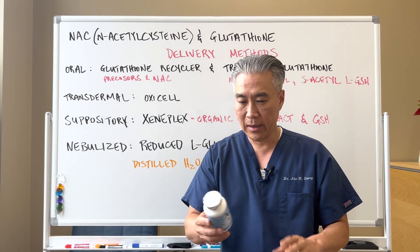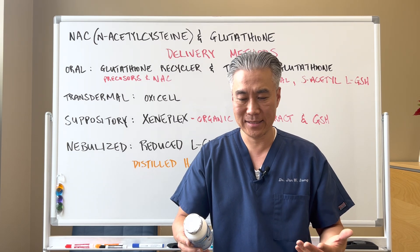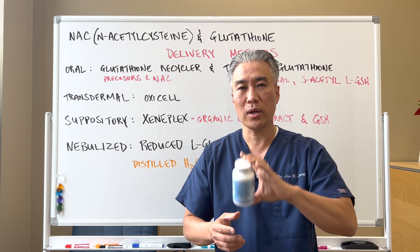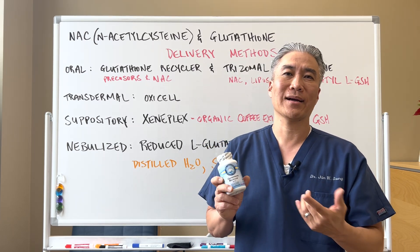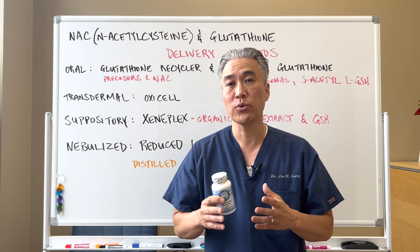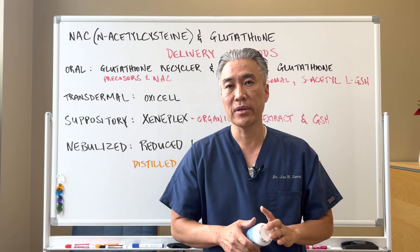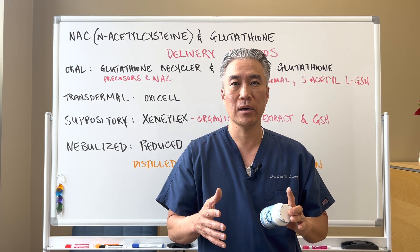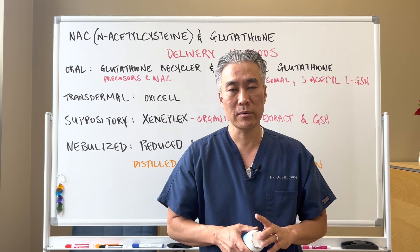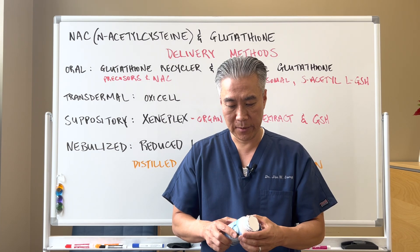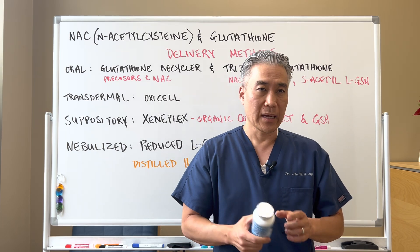The Glutathione Recycler has all the things we talked about: cordyceps, goticula, milk thistle, NAC — all in one product. It was formulated by Dr. Karazian, or Dr. K, who is very well known in the functional medicine teaching world and is an excellent clinician. So this is one we can use as a precursor.